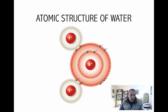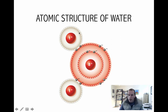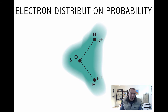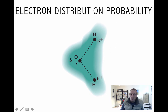One of those early diagrams of a water molecule had a delta negative next to the oxygen and a delta positive next to the hydrogen. We said oxygen was electronegative and hydrogen was electropositive. These are relative statements: hydrogen is electropositive relative to oxygen, and oxygen is electronegative relative to the electropositive hydrogen.